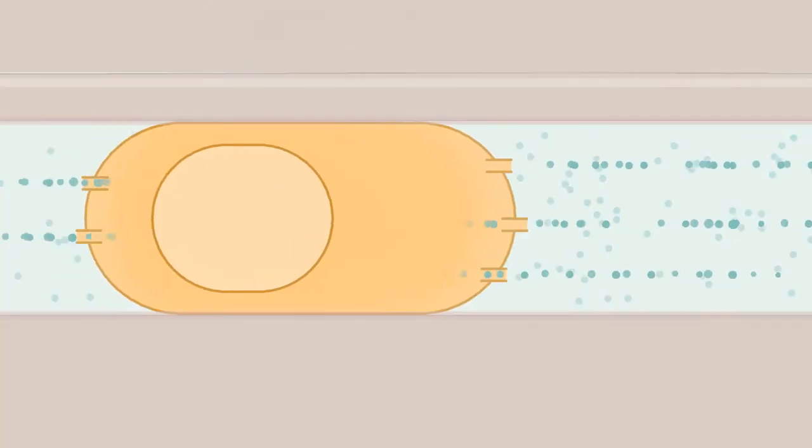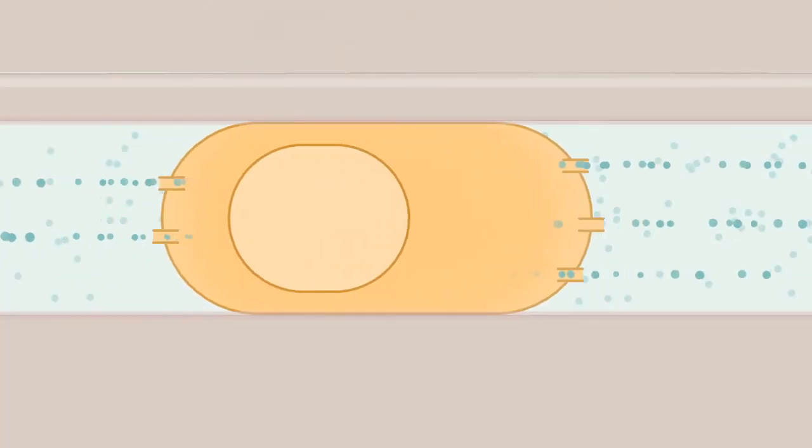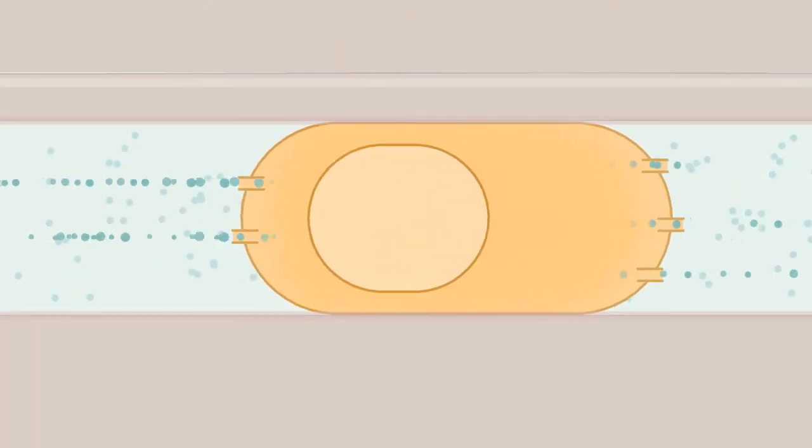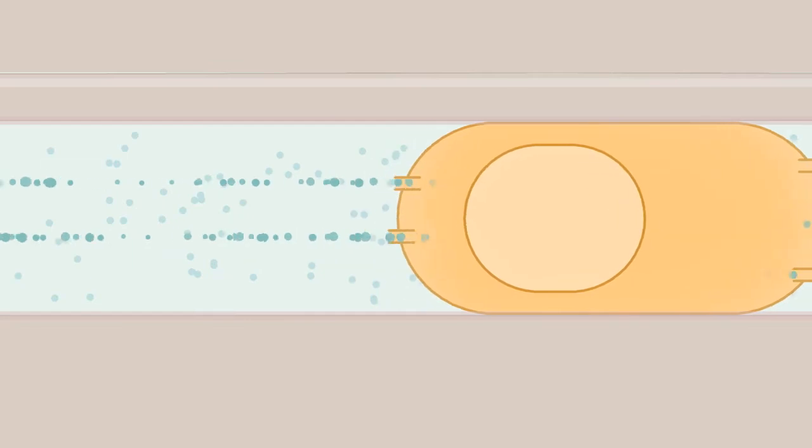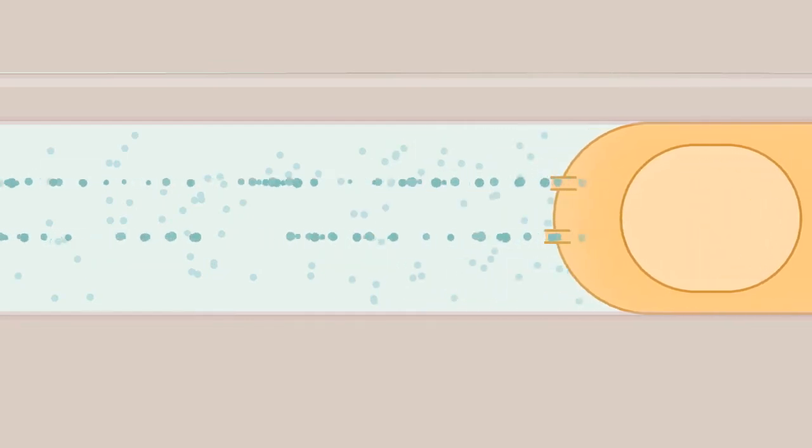One possibility that came up in our discussions is that perhaps movement of water in and out of the cell can also drive cell movement. The mechanism works like a small jet. If somehow water is flowing in at the front of the cell and flowing out at the back of the cell, the cell can translate forward.